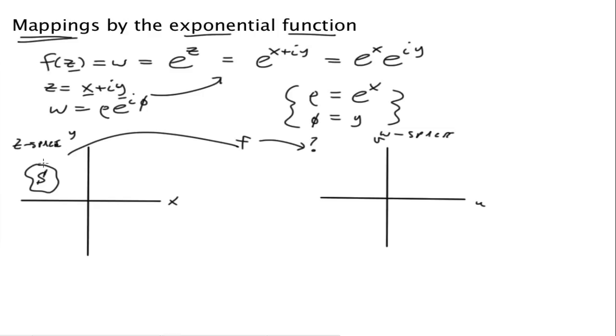One easy way to do this is to really think about fixing one of the variables and seeing what happens to the other variable. We have two inputs here. We can fix one of them and look at the other one. So the first one we can do is fix x equal to c1, a constant. In which case, we see that w is going to be equal to e to the c1, which is just a constant, times e to the iy.